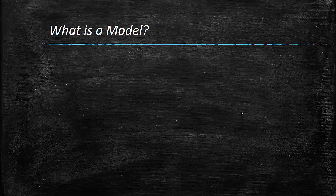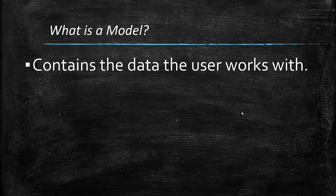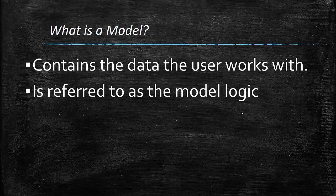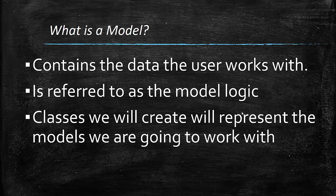But what is a model? A model will contain the data that the user will work with. For example, in our case, since we will work with drinks, we will have a drink model. And later on, when we add authentication to our application, we will have a user model as well. In other words, a model is referred to as model logic. The models will be represented as classes in our solution. So the classes that we are going to create will represent the models that we are going to work with.